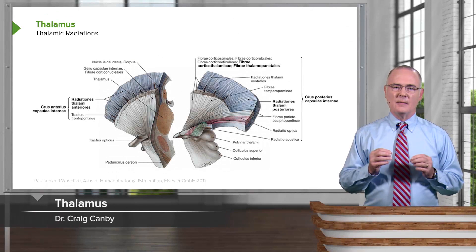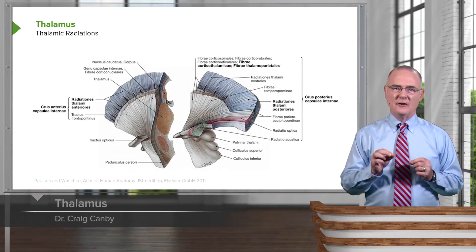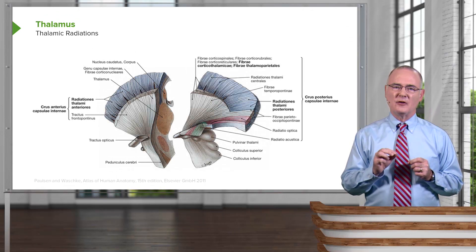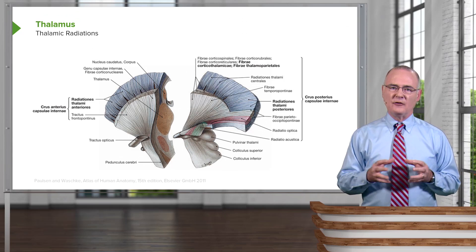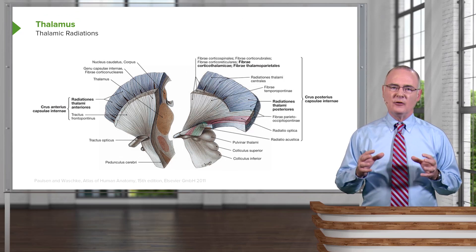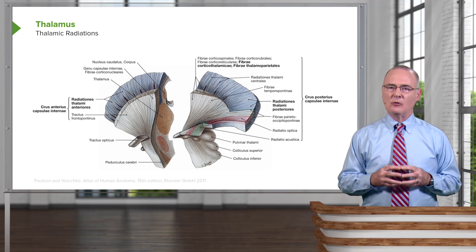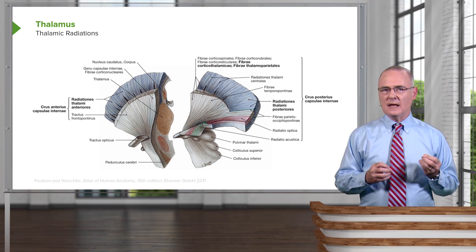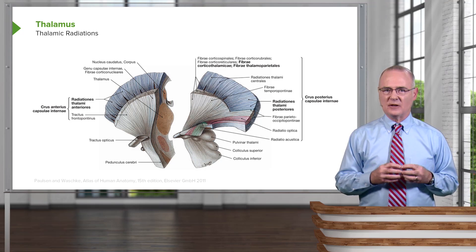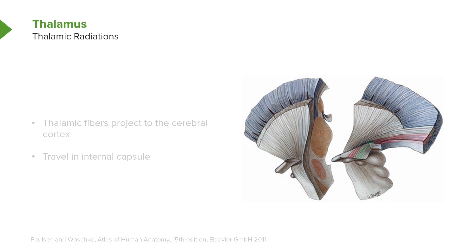I want you to understand a very important functional aspect of the thalamus. The thalamus is a very important relay center for sensory information. All sensory information is relayed through thalamic connections up to the cerebral cortex, with the exception of olfaction. This slide is demonstrating the thalamic radiations — the connections that exist between the thalamic nuclei and the cerebral cortex.